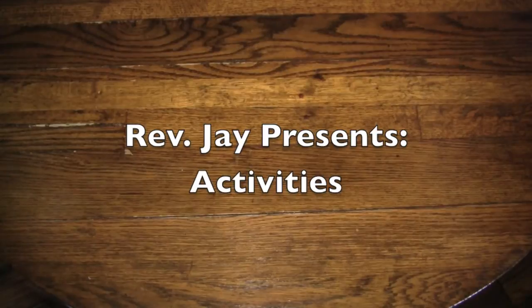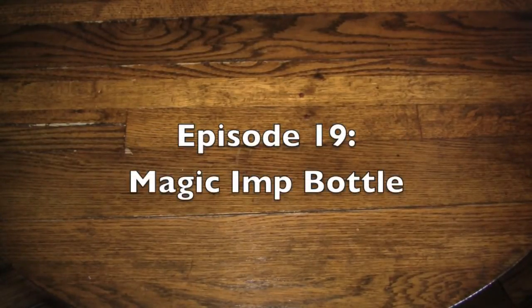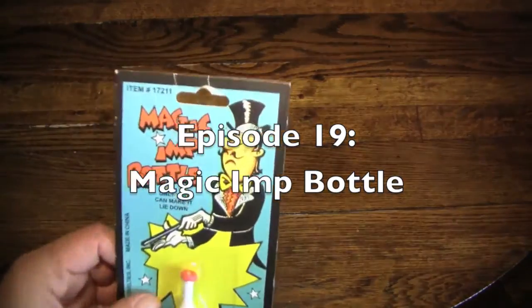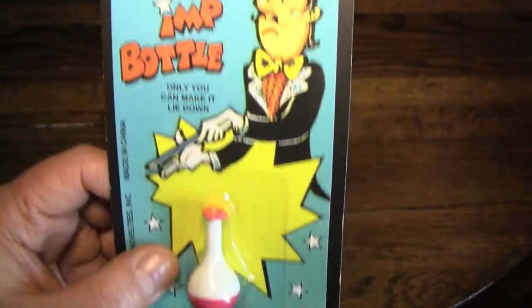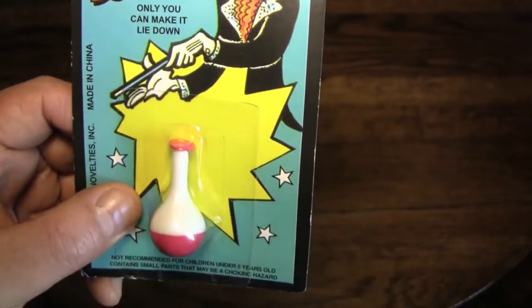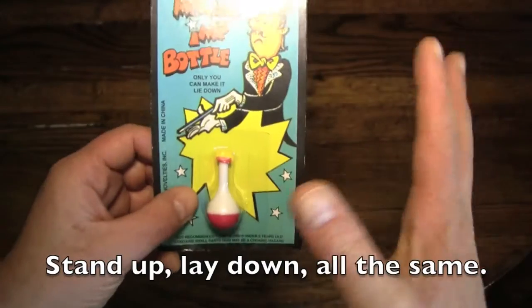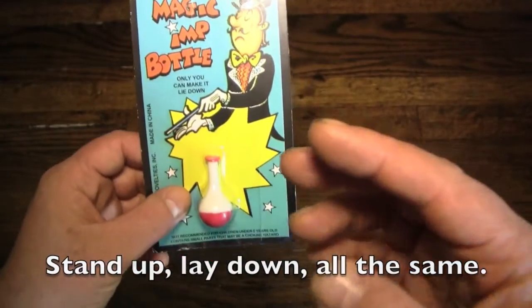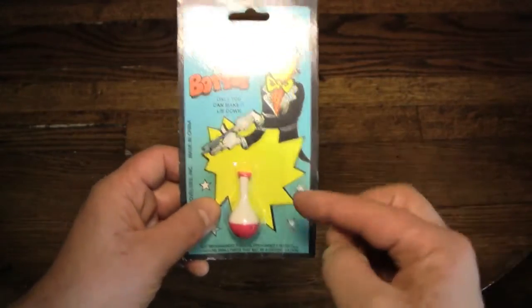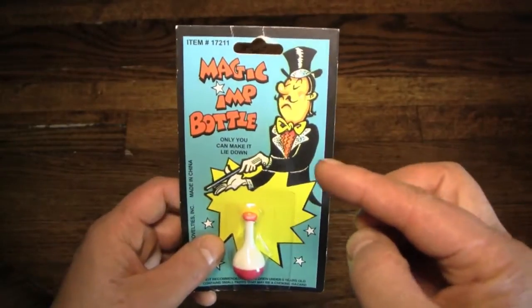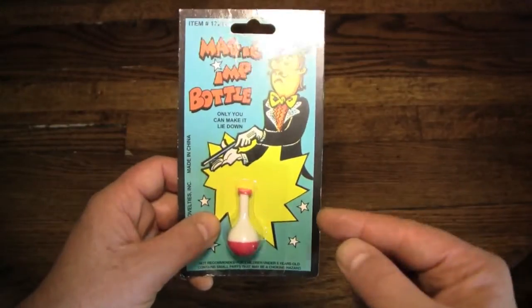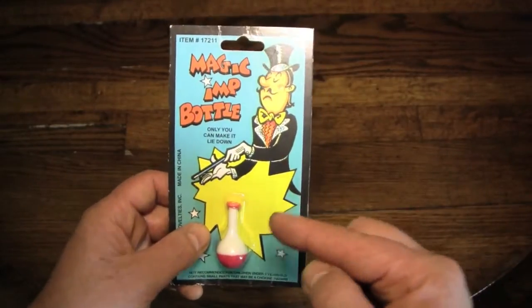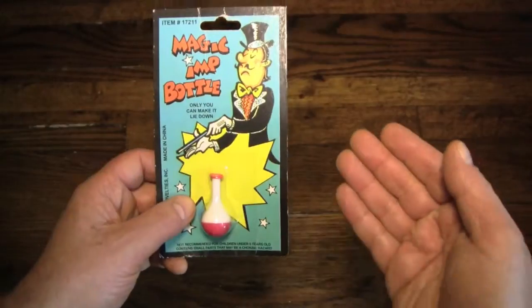And today's activity is going to be another magic trick because they've proven so popular. This magic trick is known as the magic imp bottle and this rather jaundiced looking magician is going to make this bottle stand up when nobody else can through the power of magic. Through the secret of toys, this guy, or me, we will know the trick by the end of this video to how to make this stand up as if by magic.